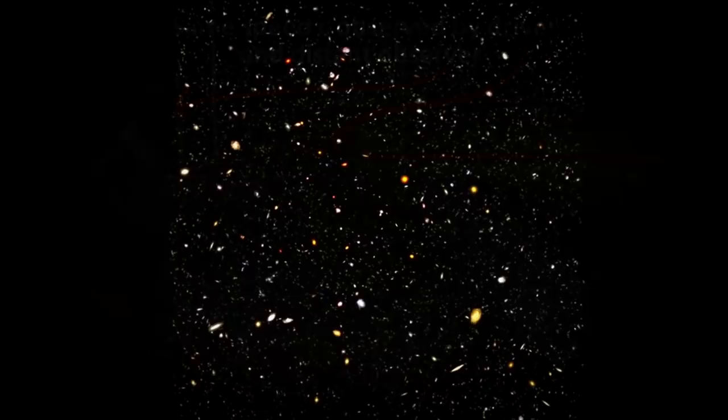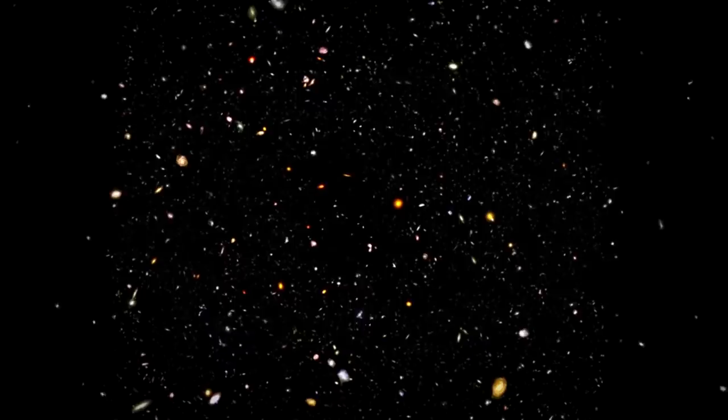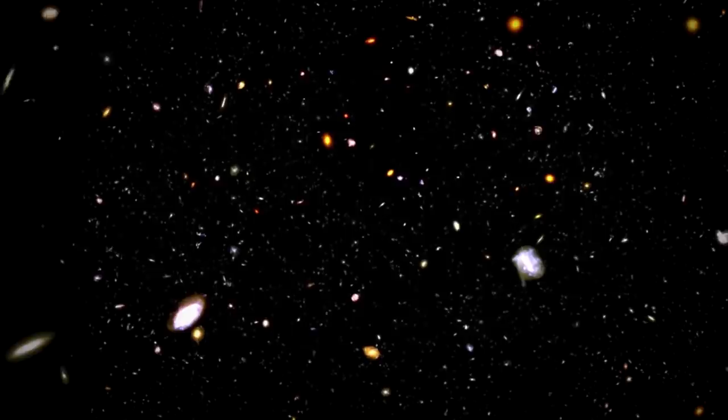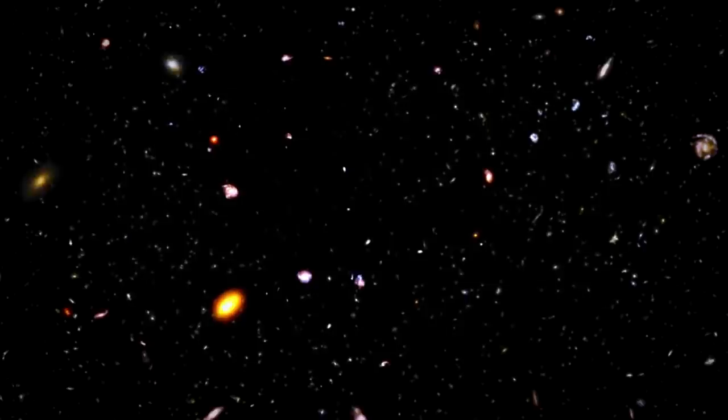This impacts the way that we can understand the universe, because if light is constant in a vacuum, it means that when we look out into space, which is effectively a vacuum, that light that we see has come from the past. And the farther out we look, the further back in time we can see. The night sky is literally a time machine.